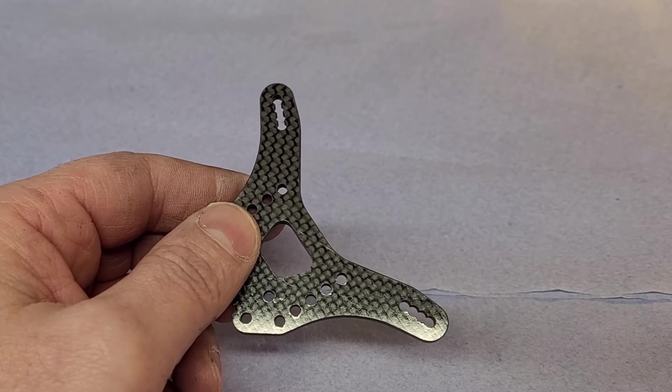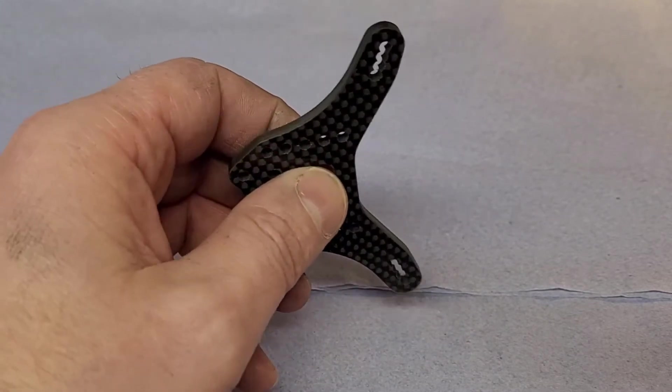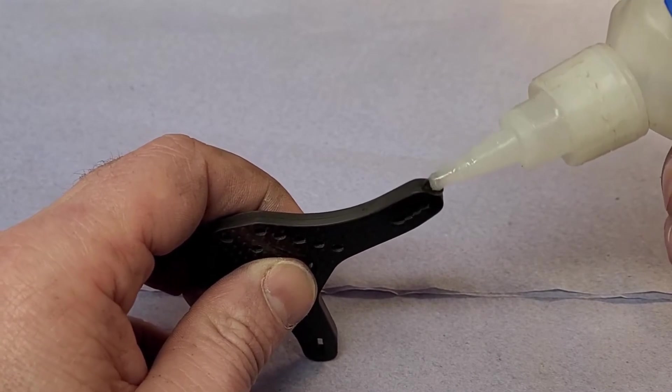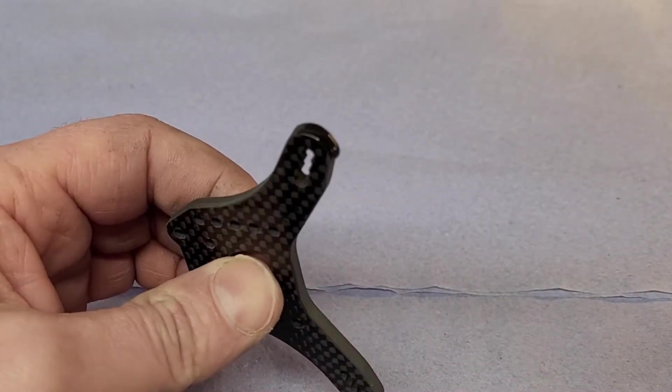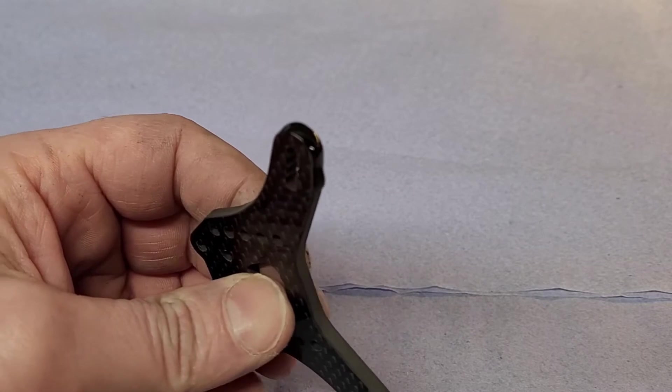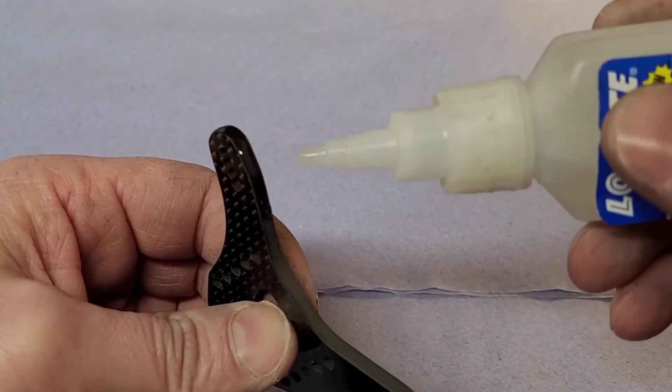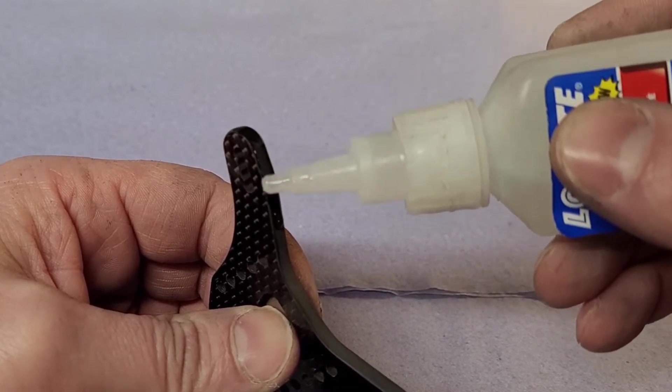You then want to start at any point on here and then just get a nice bead of glue on there, and then just basically follow it around your carbon fiber item. Make sure there's a nice bead on there. Make sure it covers the whole edge.